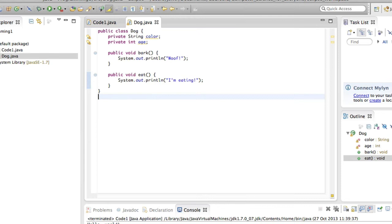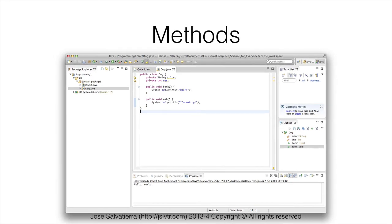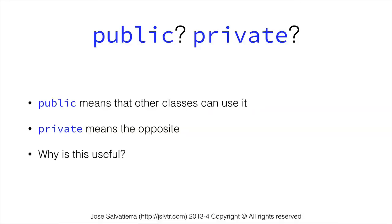Let's take a look at the methods. Notice how they're public and void, and then you've got bark and eat. They do pretty much the same thing — one of them prints 'woof', the other one prints 'I'm eating', but they're both public and void. So what does this mean? Public or private — these are two keywords you can use in your methods. Public means that other classes can use the method. Private means the opposite — no other class except dog can use this method.